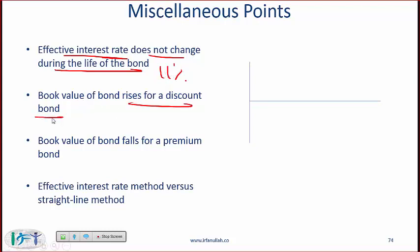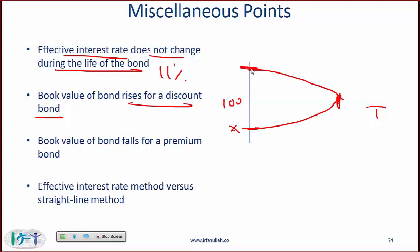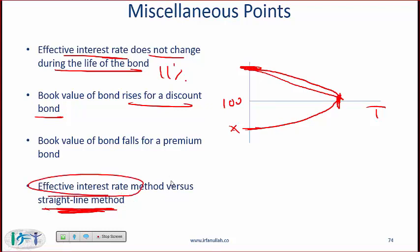The bond price rises for a discount bond: if par value is 100, the bond initially starts at a discount, but when it matures the price comes back to par. For a premium bond it goes the other way — starts at a premium and eventually comes down to par. There is also a straight-line method where you use a straight line rather than a curve from the initial value to the final value, but mostly we use the effective interest rate method.